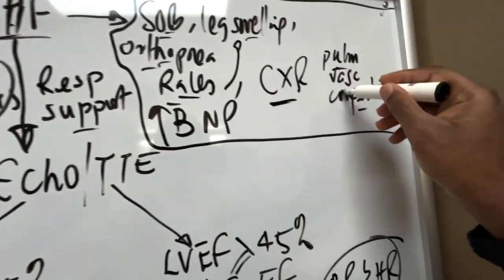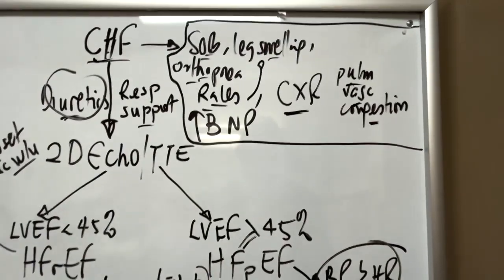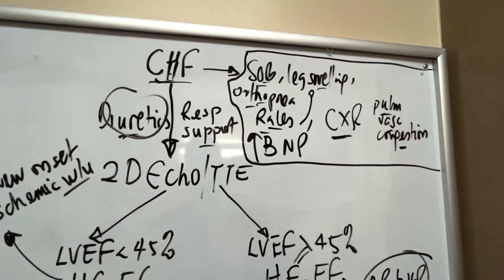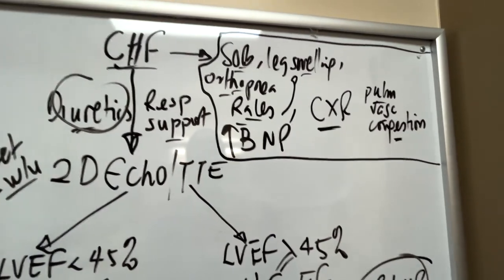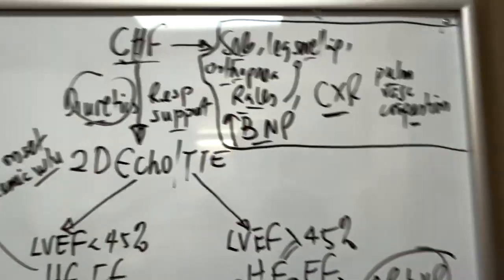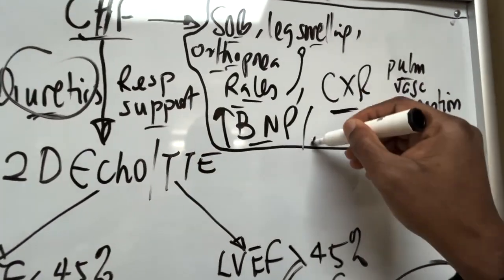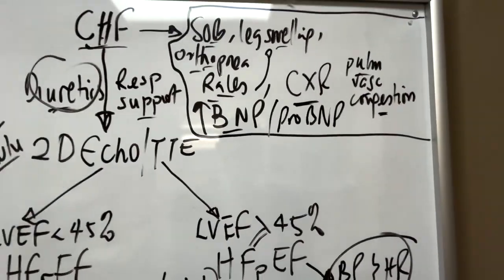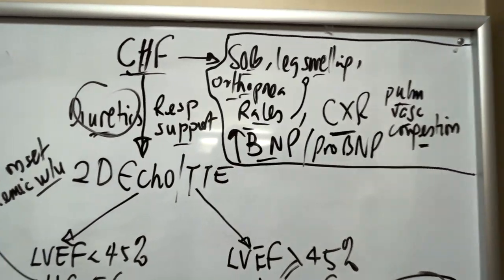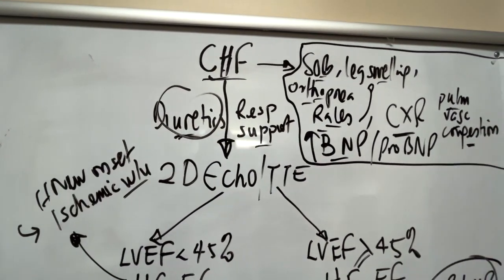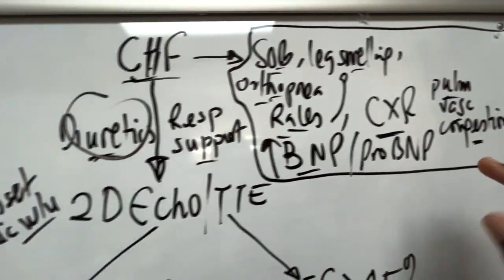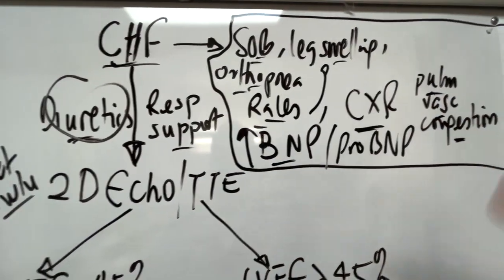Chest x-ray with pulmonary vascular congestion is also indicative of heart failure diagnosis. The important thing is it's pretty much a clinical diagnosis because you don't necessarily need other lab workup per se. But if you have to do any lab, BNP or pro-BNP will be very useful. Elevated BNP or pro-BNP is indicative of heart failure, especially if it's much higher than their baseline.